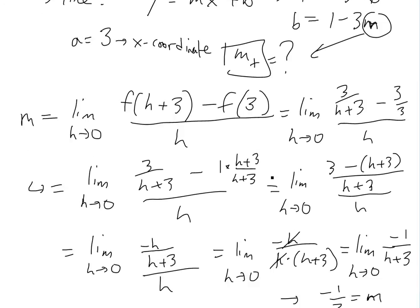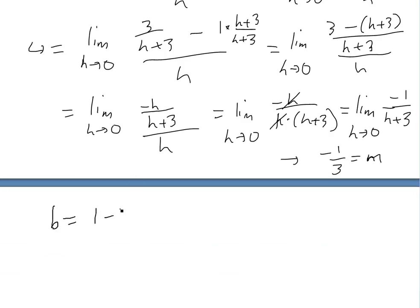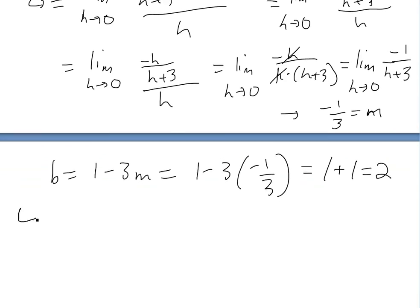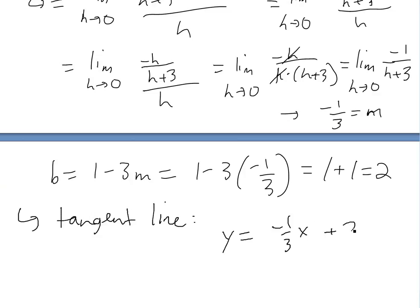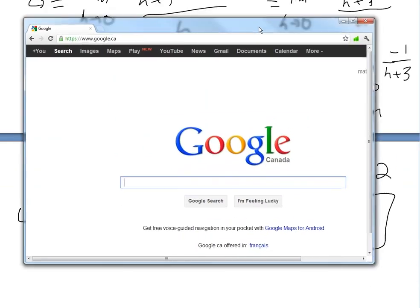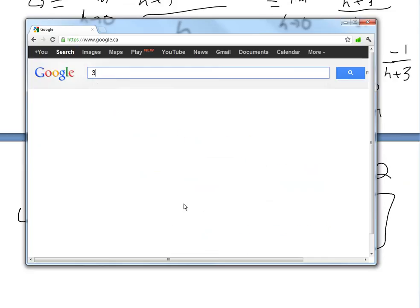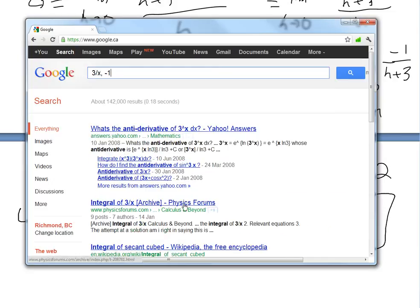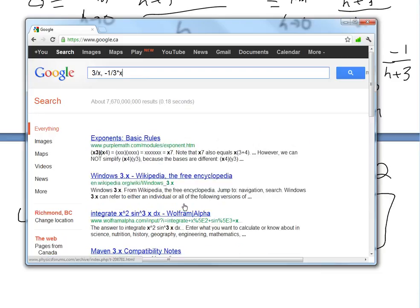We got the slope, so now b equals 1 minus 3m, which equals 1 minus 3 times negative 1 over 3. The 3s cancel, giving 1 plus 1, which equals 2. So our tangent line equation is y equals negative one-third times x plus 2.